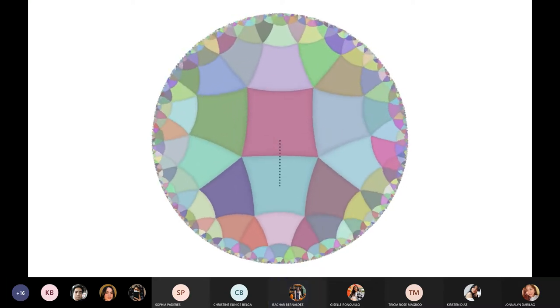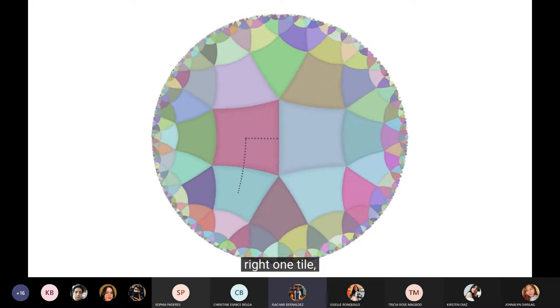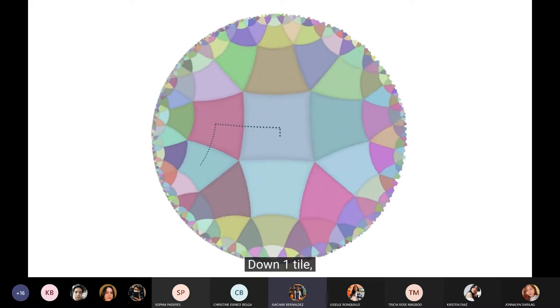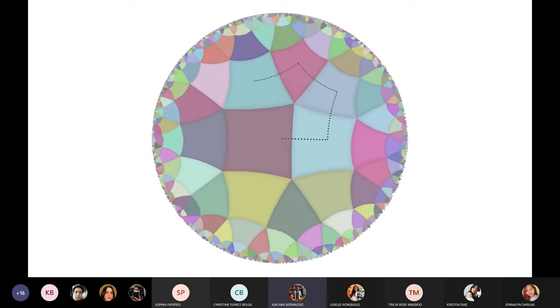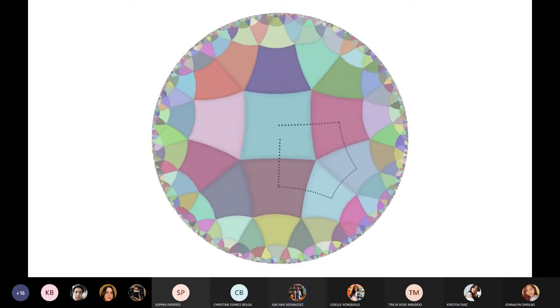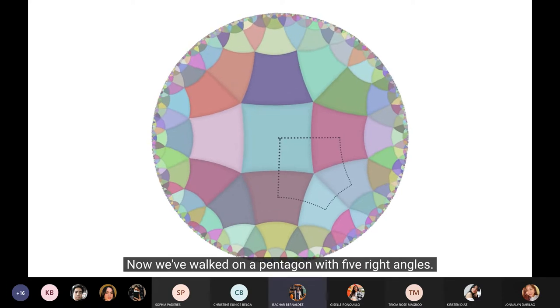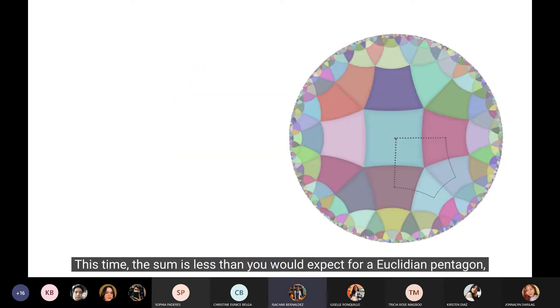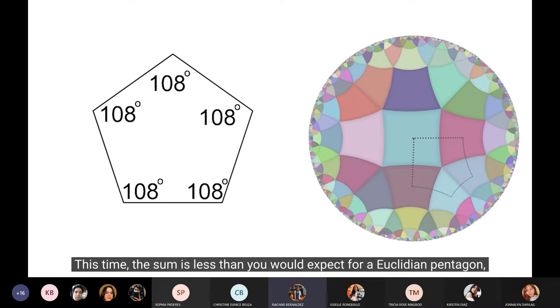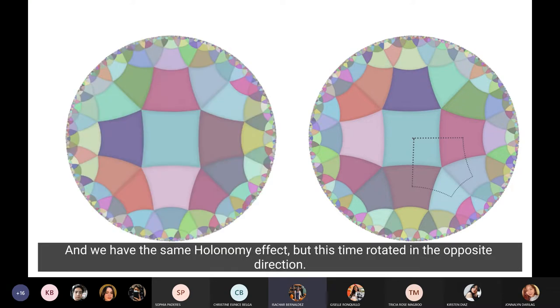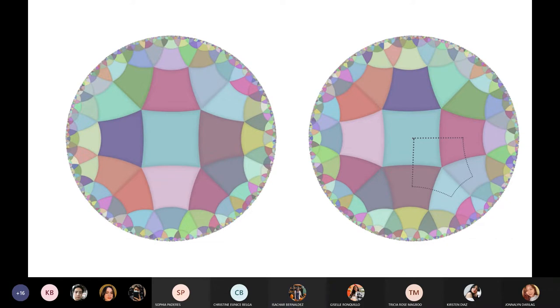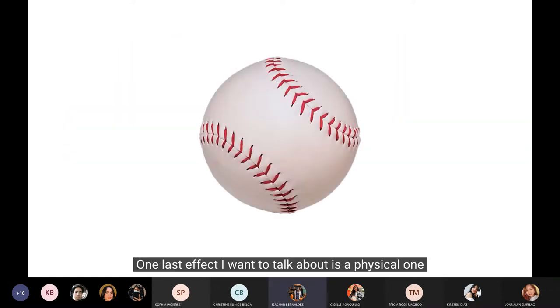So take a guess what happens on a hyperbolic walk. We'll walk up one tile, right one tile, down one tile, left one tile, and finally up one more time. Now we've walked on a pentagon with five right angles. This time, the sum is less than you would expect for a Euclidean pentagon, because polygon angles have a smaller sum in hyperbolic space than Euclidean. And we have the same holonomy effect, but this time rotated in the opposite direction. One last effect I want to talk about is a physical one.